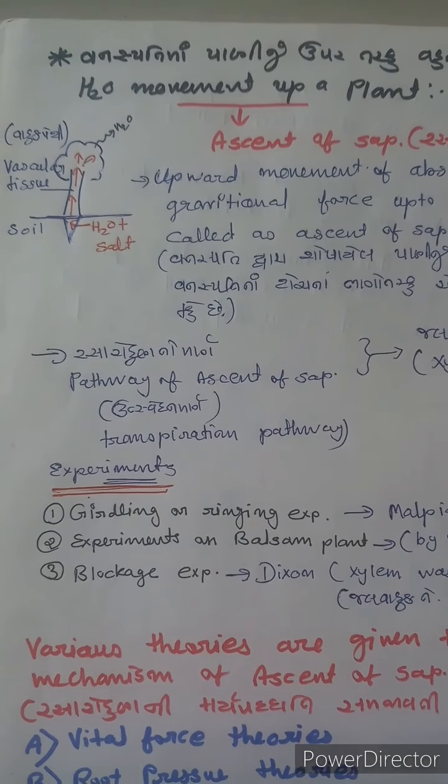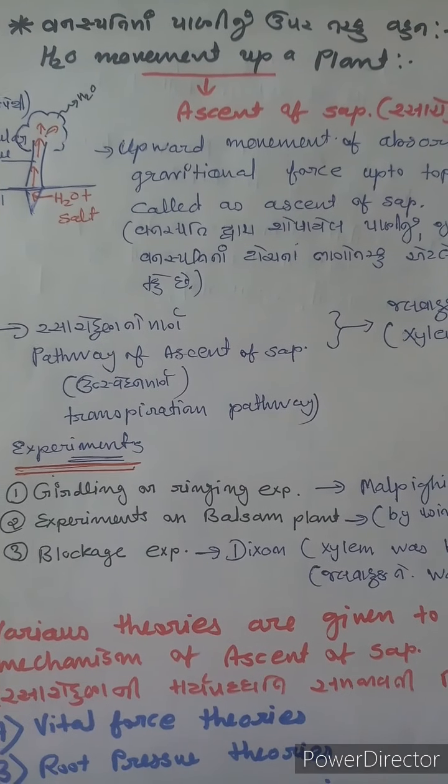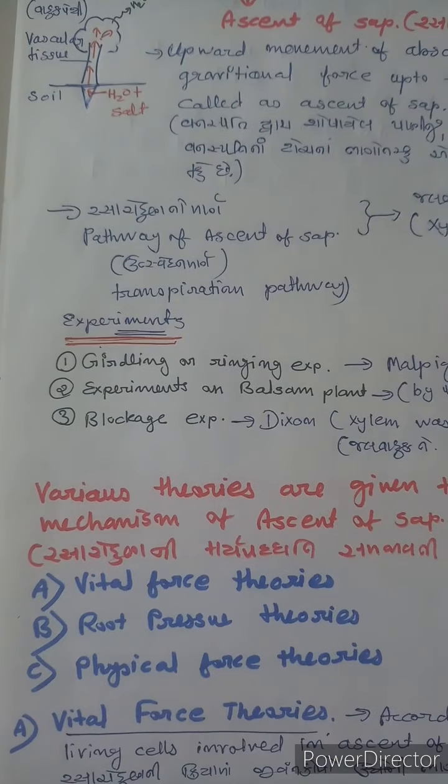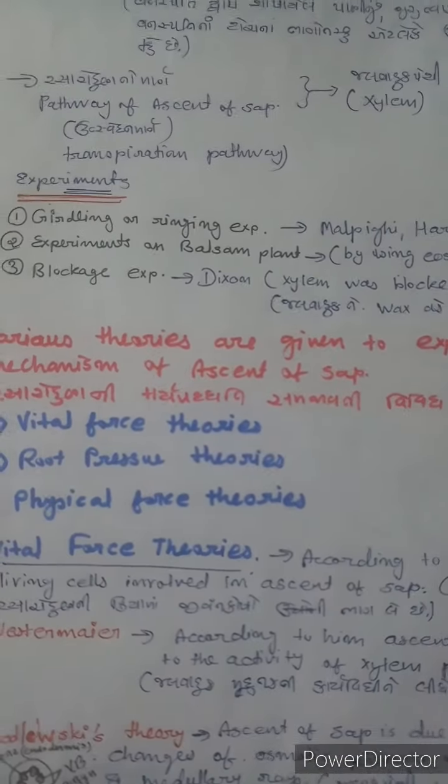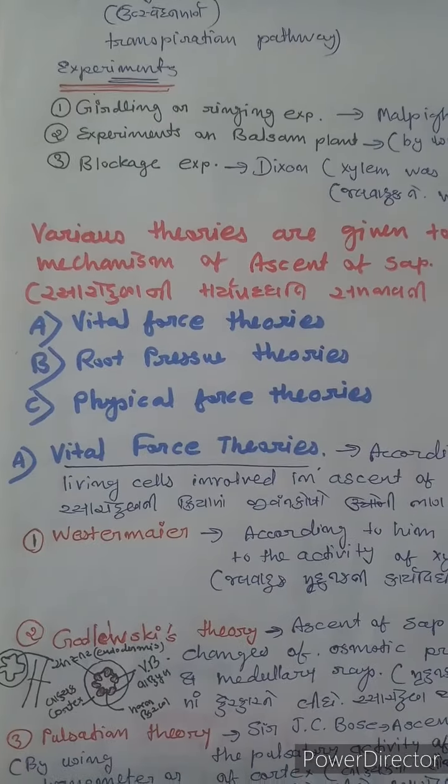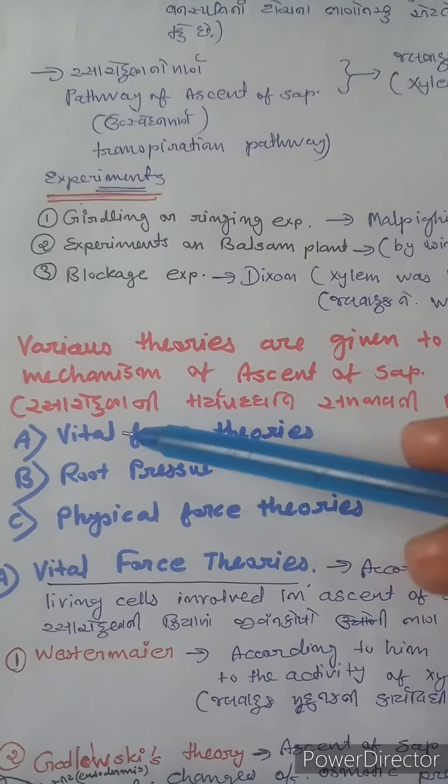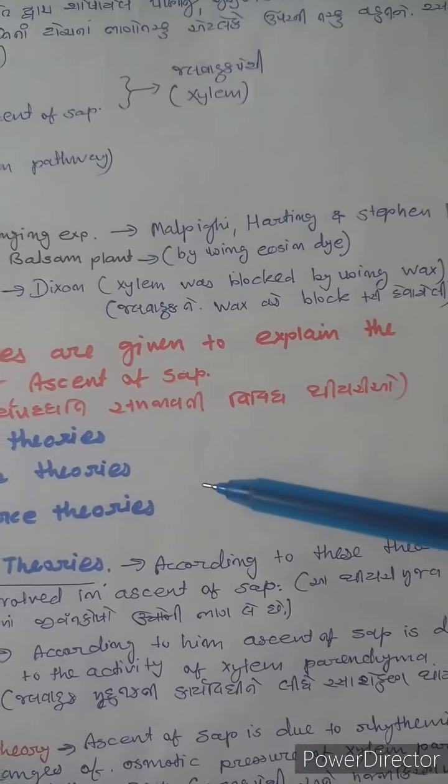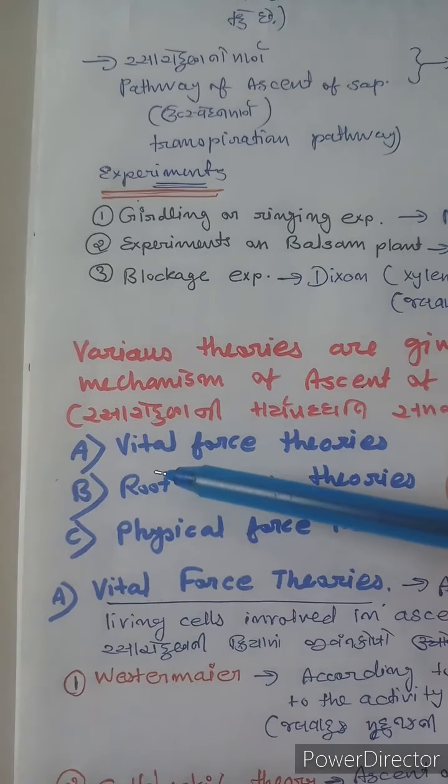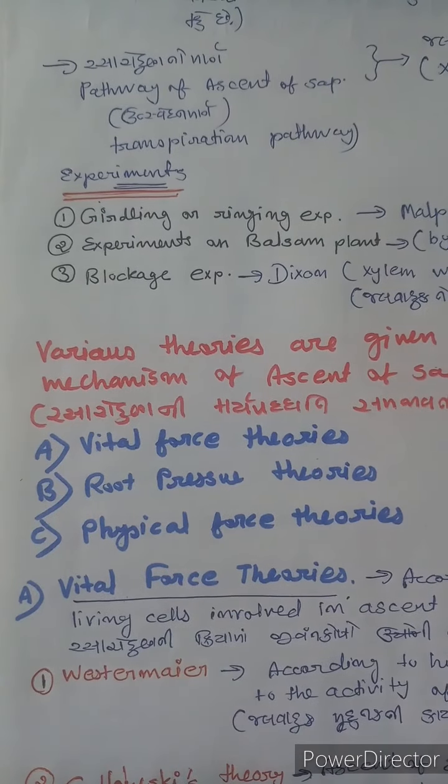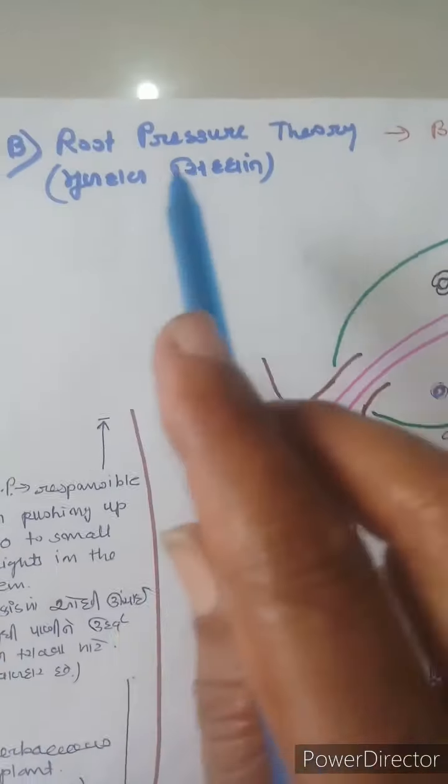Hello dear students, I am Sapna Vithlani from Awesome Pathak School. We are talking about water movement in plants. There are various theories given to explain the mechanism of ascent of sap. Water's upward movement is called ascent of sap. We have discussed vital force theory and root pressure theory. Today we are discussing root pressure theory in detail.